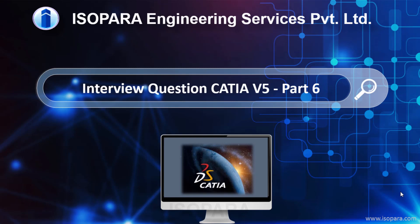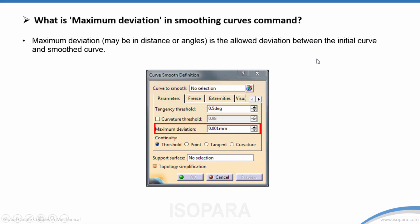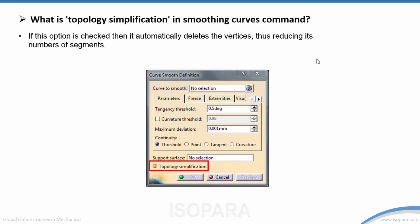In this video we will learn about interview questions related to CATIA V5 — this is Part 6. What is the maximum deviation in the smoothing curve command? Maximum deviation, whether in distance or angles, is the allowed deviation between the initial curve and the smooth curve.